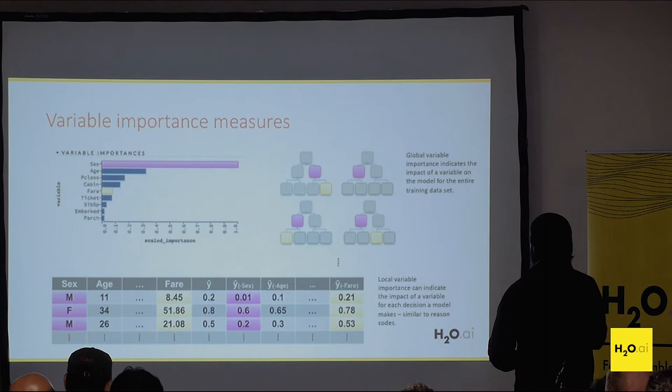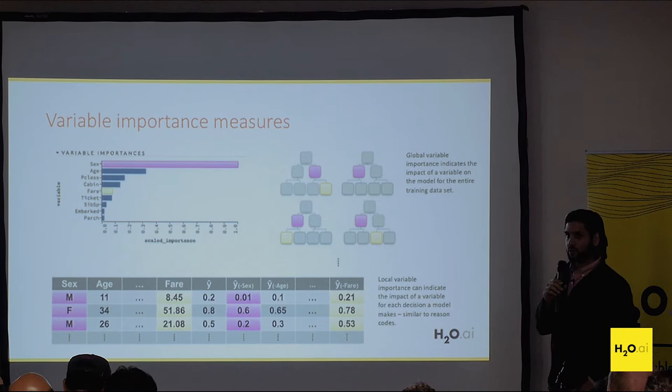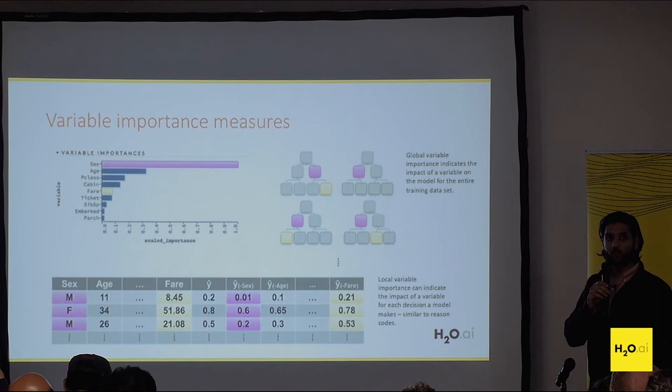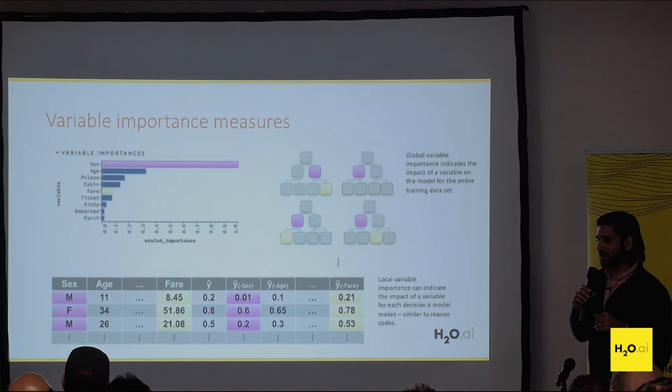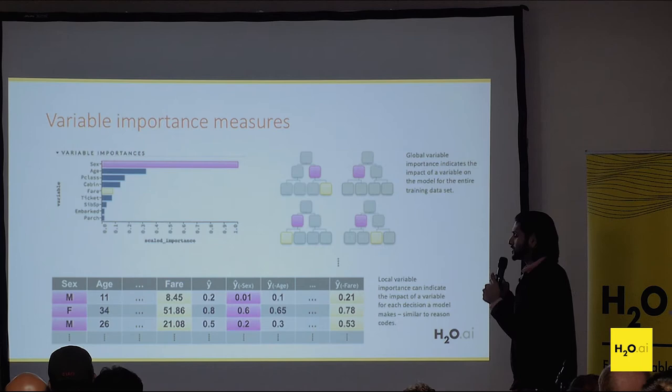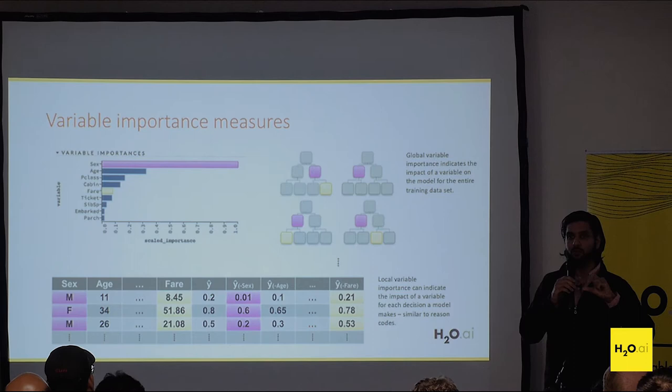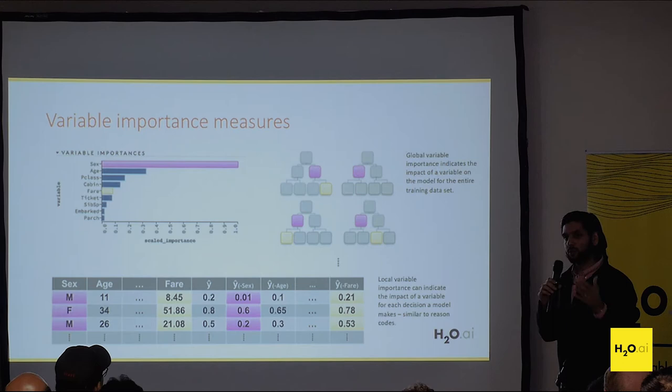The last technique is variable importance, which we can do in two ways. The first is global variable importance — the common one you'd see in a GBM or random forest. The global variable importance indicates the impact each variable has on the model. For a GBM, we look at how many times a variable shows up at the top of each tree — the more times it shows up, the more important it is globally, meaning on average across the whole dataset.